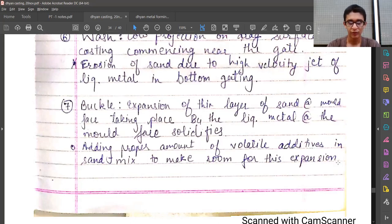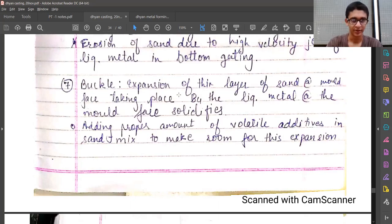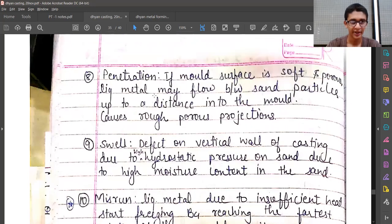The eighth is penetration. If mold surface is soft and porous, liquid metal may flow between sand particles, up to a distance into the mold. Penetration as a word means very simple, and it causes rough porous projections on the surface.